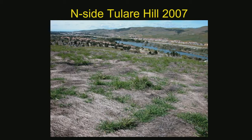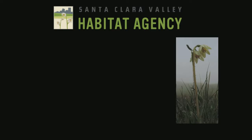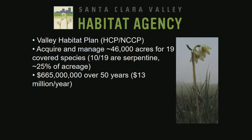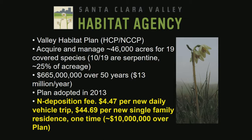This all led to the development of a habitat conservation plan. The Santa Clara Valley Habitat Agency administers the Valley Habitat Plan, a habitat conservation plan and natural communities conservation plan. The ultimate goal is to acquire and manage about 46,000 acres for 19 covered species. More than half are serpentine-related. Total cost over 50 years is $665 million — about $13 million a year. The plan was adopted in 2013 with a novel nitrogen deposition fee based on new daily car trips, coming out to about $45 per new single family residence.